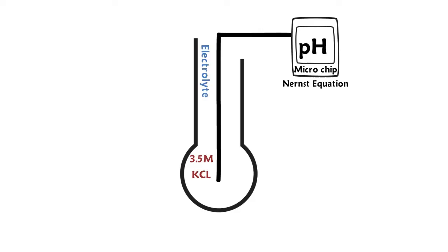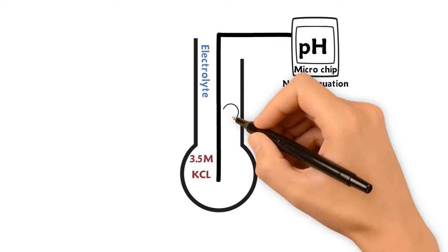The KCL solution can be a gel or a liquid depending on its designed use. This KCL solution leaks out of the glass bulb through a junction at a specific rate.